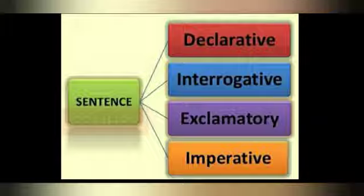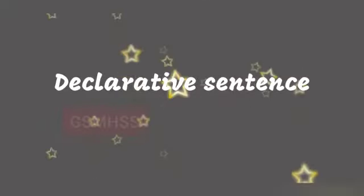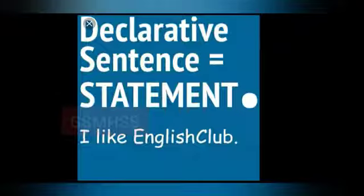Let us see these sentences with examples. First one: declarative sentence. A declarative sentence is a statement — it is a simple sentence.